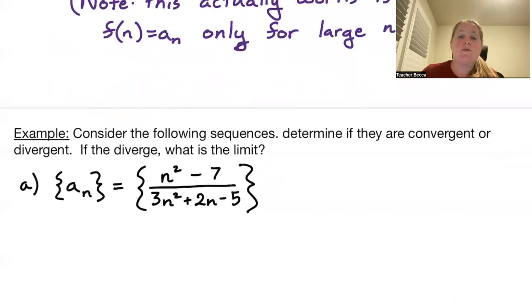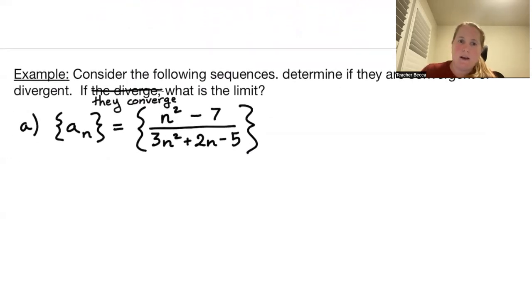So, for example, let's consider the following sequences: determine if they are convergent or divergent. If they converge, what is the limit? So in this first one, we have a_n is (n² - 7)/(3n² + 2n - 5).